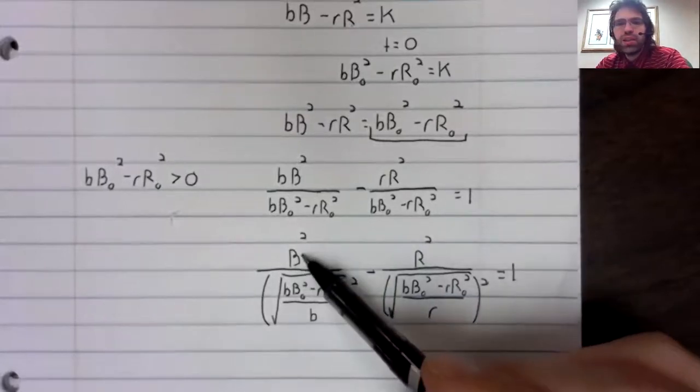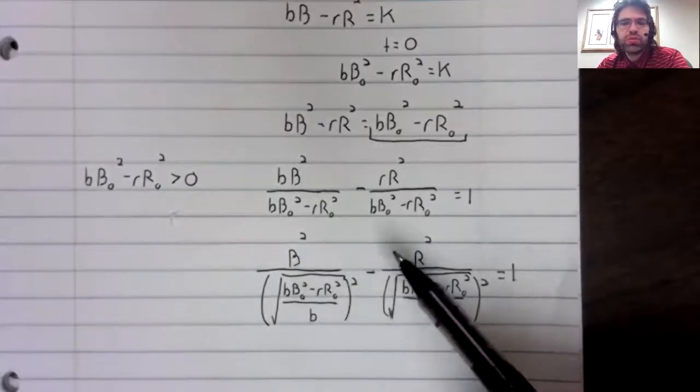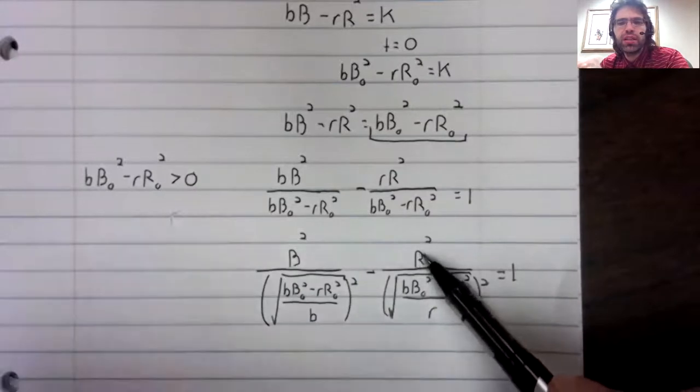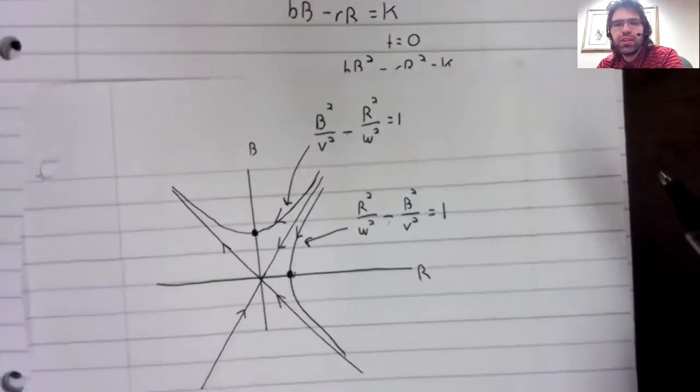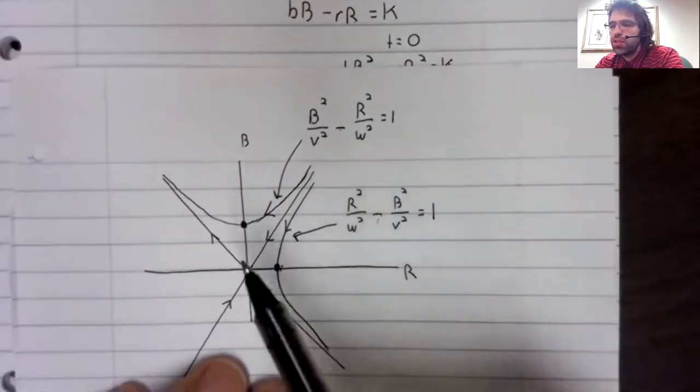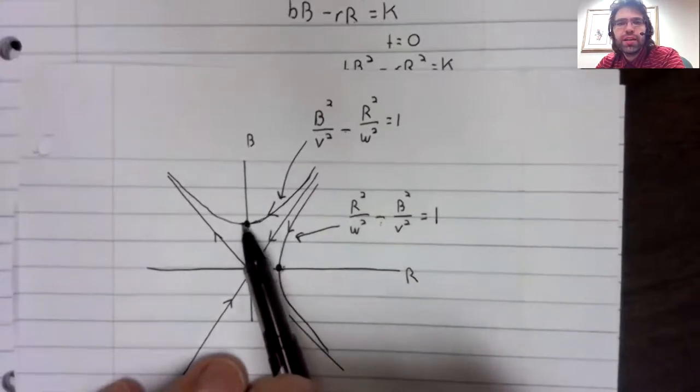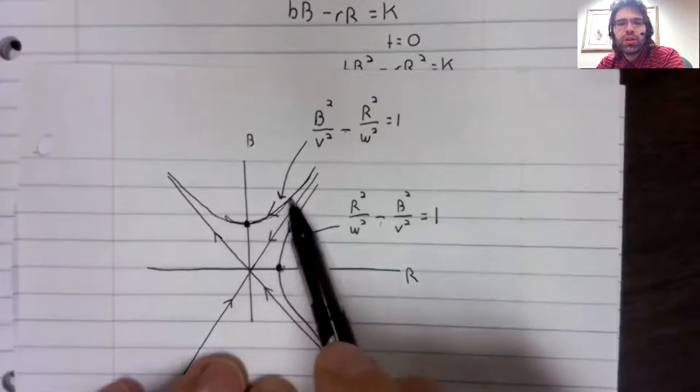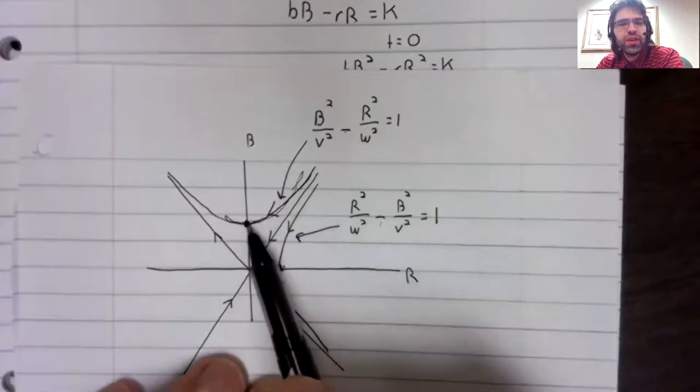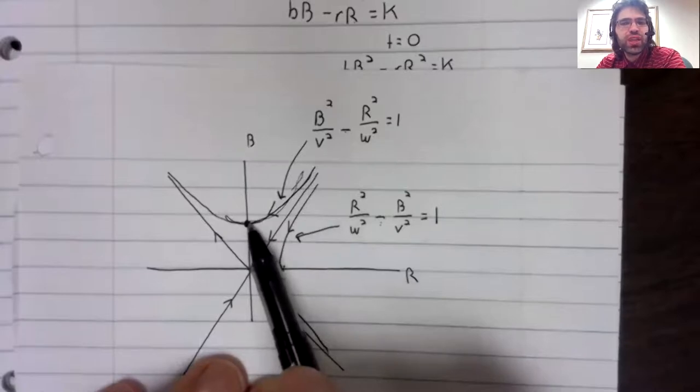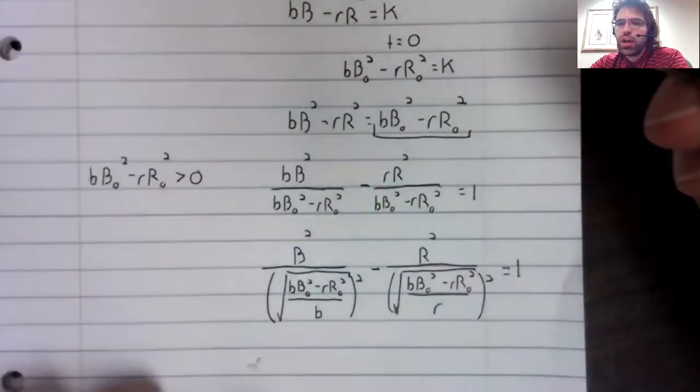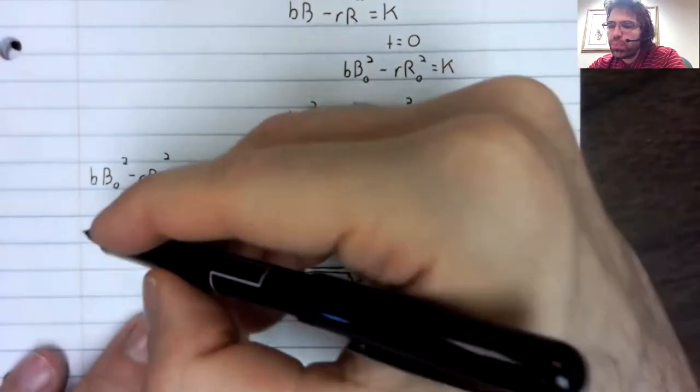This B is first. This R is being subtracted. So we look like this. If the hyperbola looks like this, it hits the B axis. That is to say, R becomes zero. Red army is wiped out.